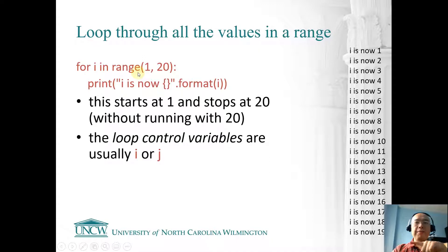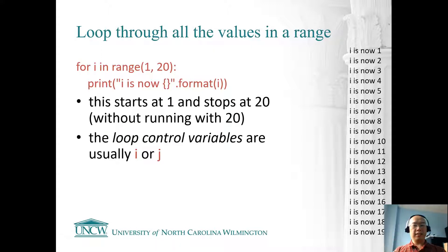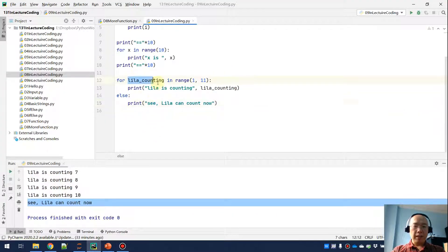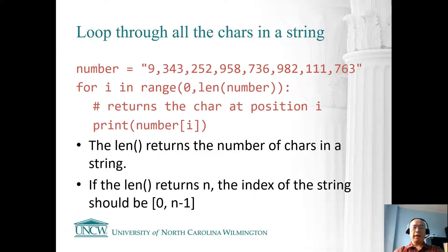The other part I want to talk about: when we do 'for I in range(1, 20)', the variable I is called the loop control variable — we use it to visit all the members of a range. This loop control variable is mostly meaningless after the iteration and is really only used inside the iterations, so we give it a short variable name. Usually we use I, J, X, or Y. But here I'm using Lila_counting as a meaningful control variable — it represents the number Lila is counting.